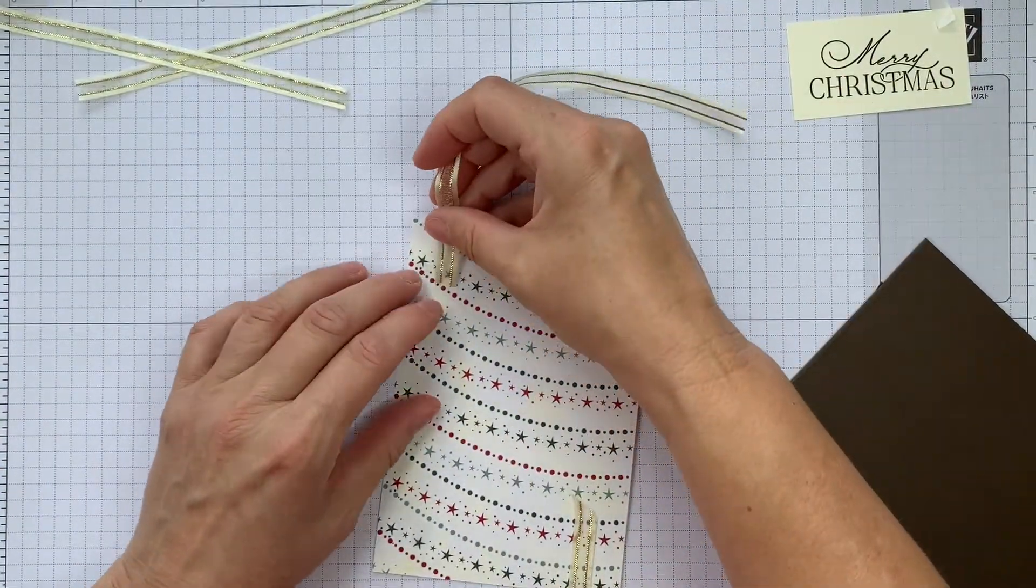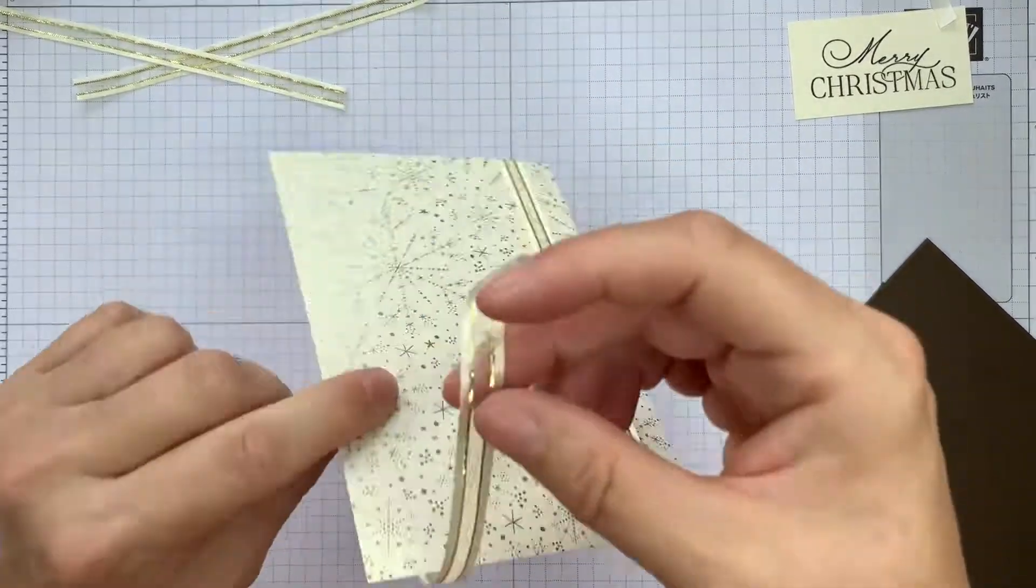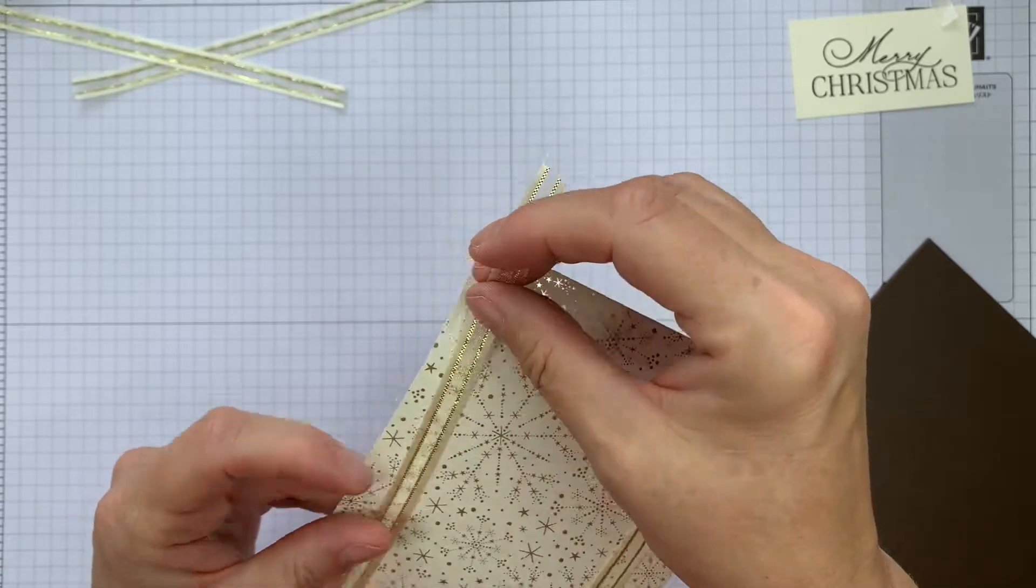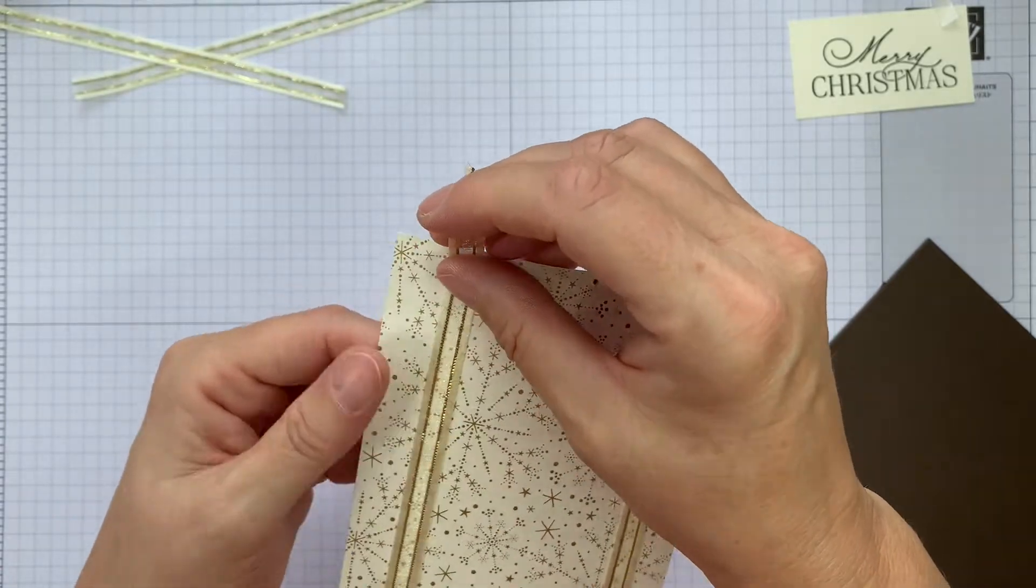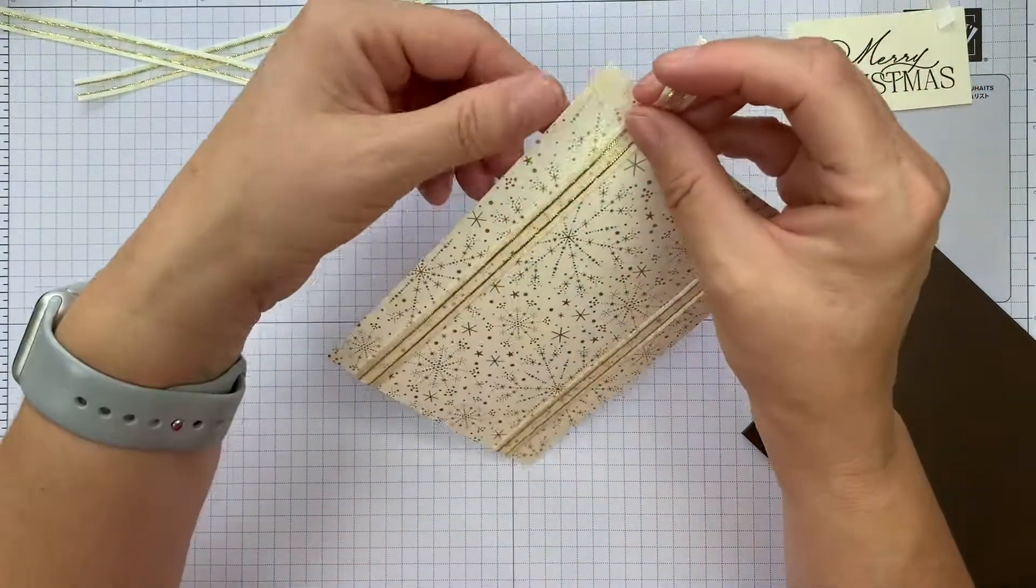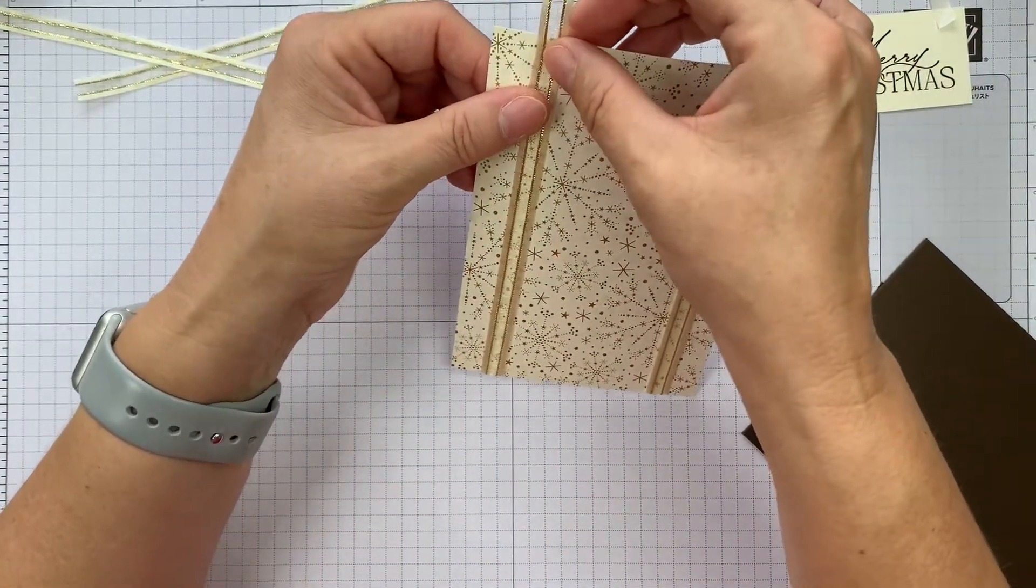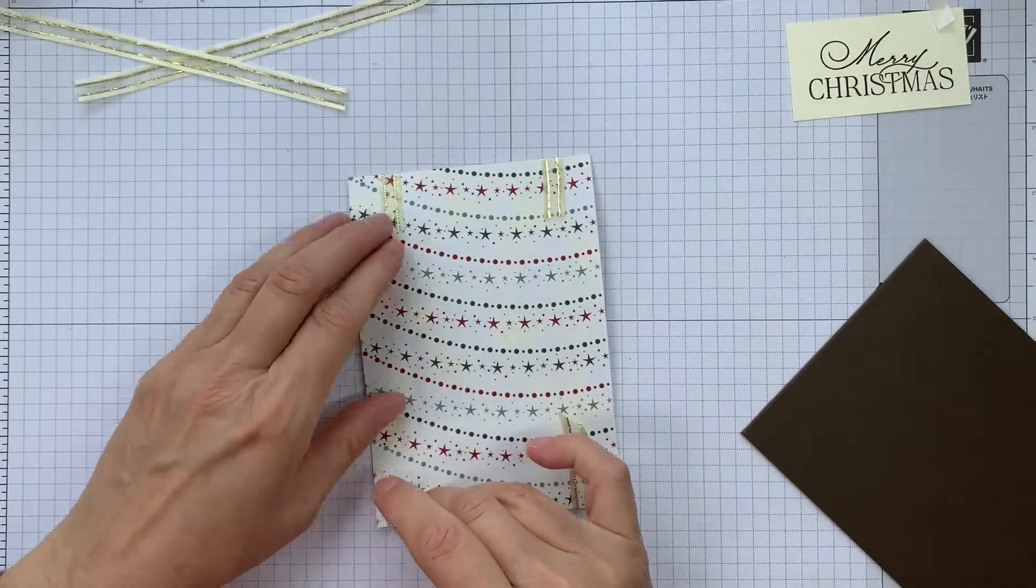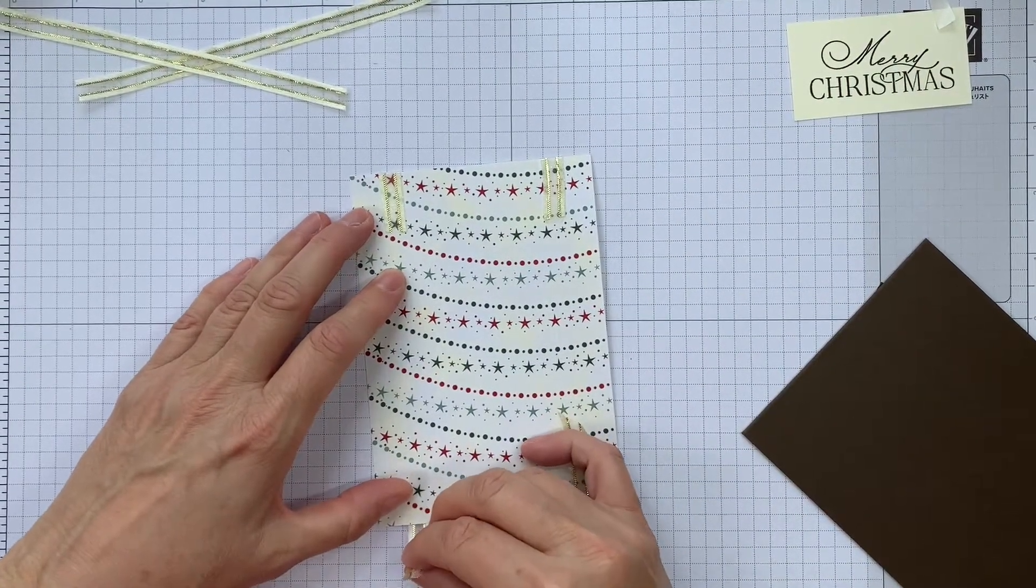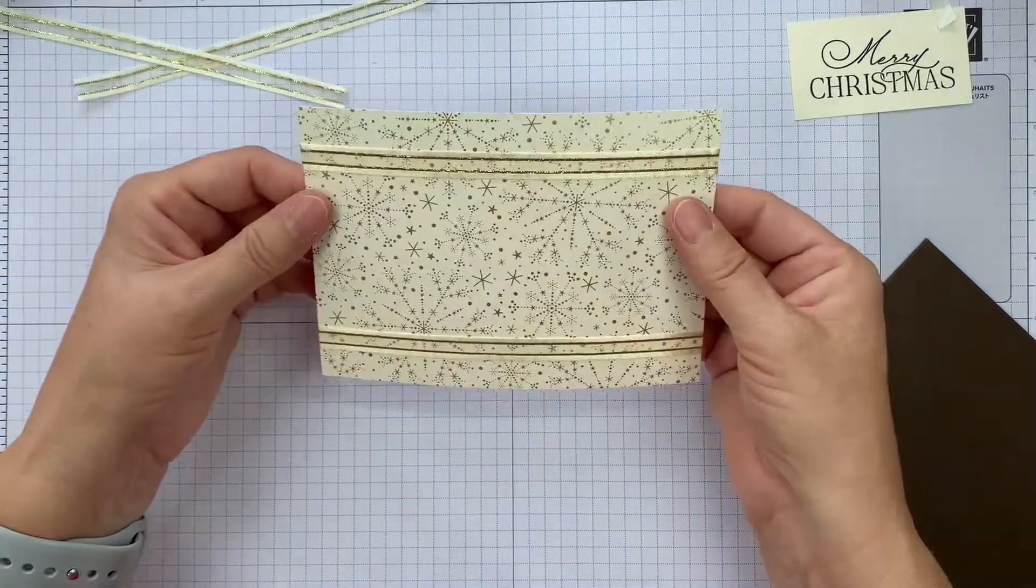So I'm doing the same thing on the other side. And I'm just going to make sure that I've got that even. And if you've got some lines in the background like I have here, that just helps you to keep it lined up. Keep it straight. So again, I'm going to lay that down and fasten that over like that.